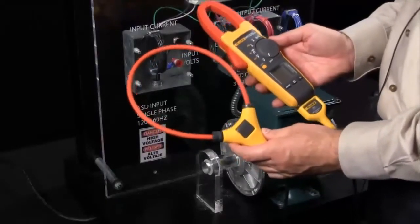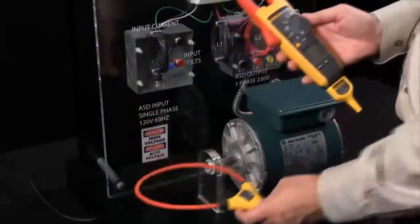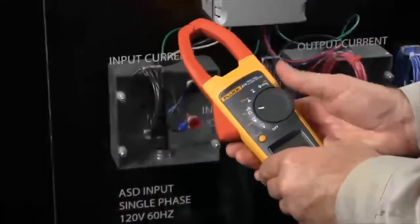How do I make current measurements using the Fluke iFlex system? We're all familiar with how to make current measurements using your regular clamp meter. Simply set the dial to measure AC current,